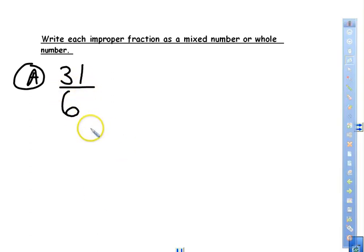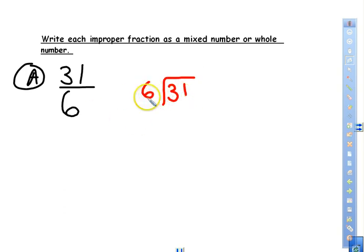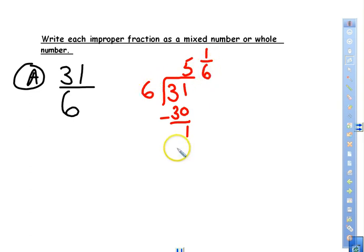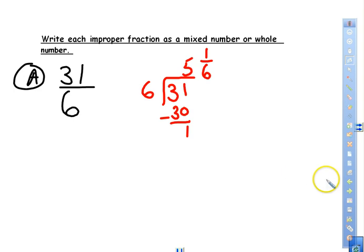Now we write each improper fraction as a mixed number or whole number. To solve, we find how many denominators go into the numerator by dividing — the top number goes in the division box. So 31 divided by 6: six goes into 31 five times, giving 30; subtract to get 1 remaining. We do not add decimals or zeros — the remainder tells us how many slices are left out of a possible 6. The answer is 5 and one sixth.